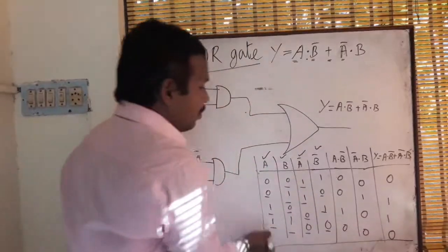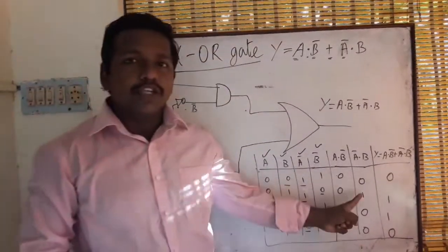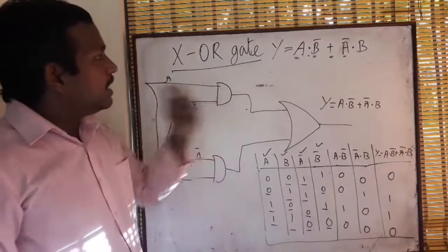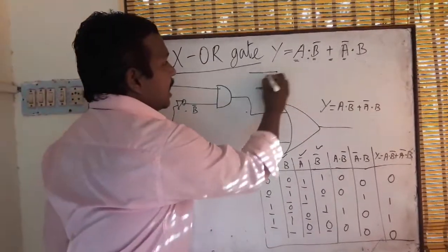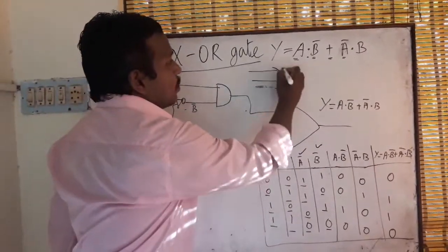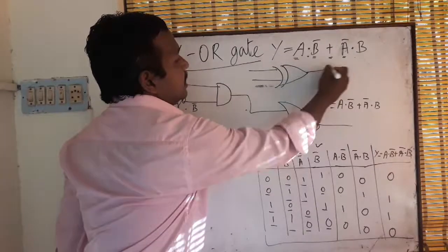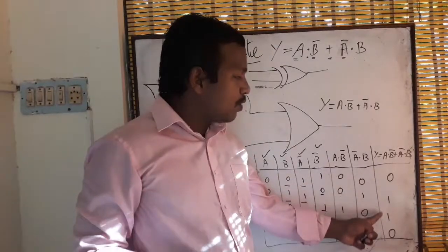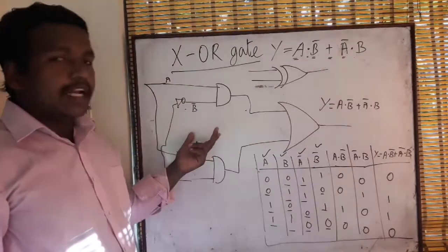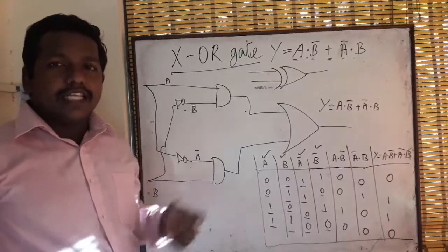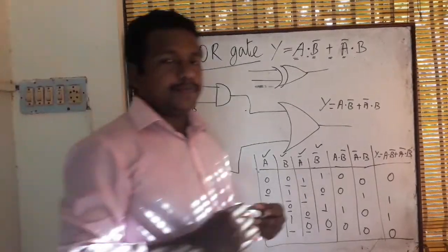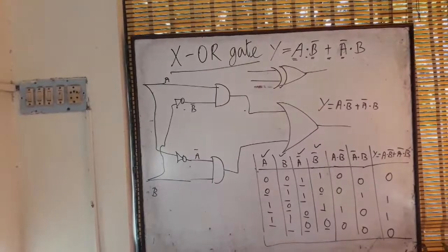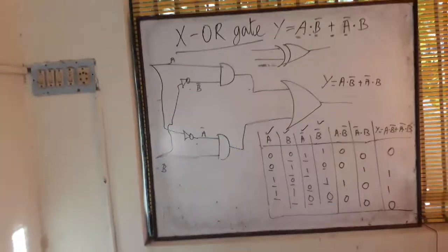The final output for the truth table will be 0, 1, 1, 0. The symbol of the XOR gate will be like a normal OR gate symbol with an extra curve, representing the XOR gate. The output of the XOR gate is 0, 1, 1, 0. The circuit diagram for the XOR gate is shown here. Thank you.